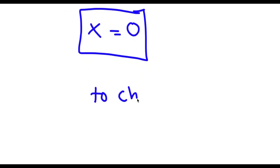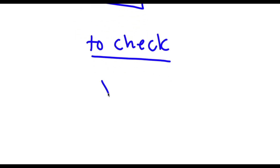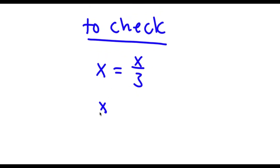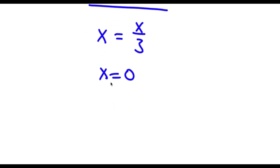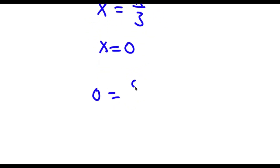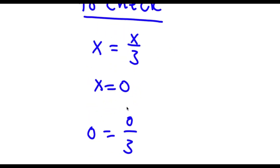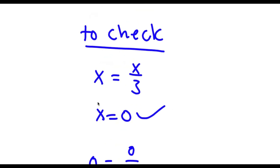Now to check: I had x is equal to x over 3 and the value of x is 0. So now I have 0 is equal to 0 over 3. 0 divided by any number is simply 0, so now I have 0 equals 0 — and because this is right, I know my solution is right.